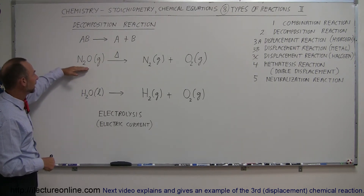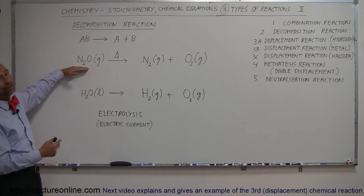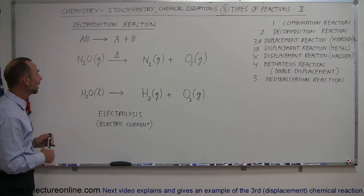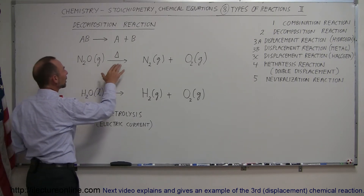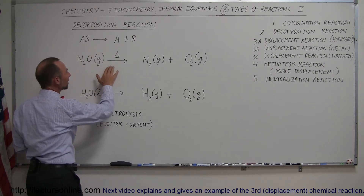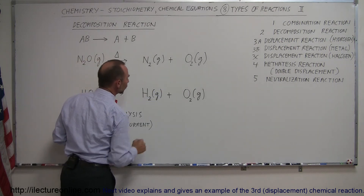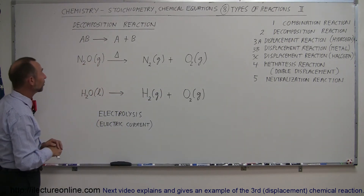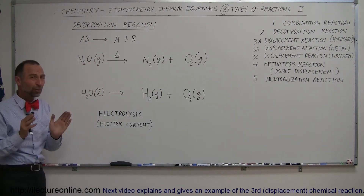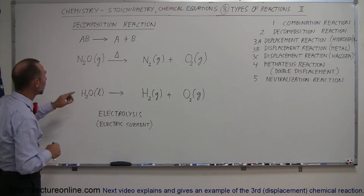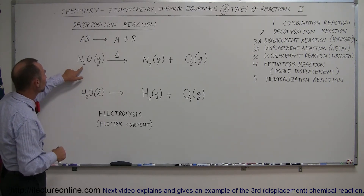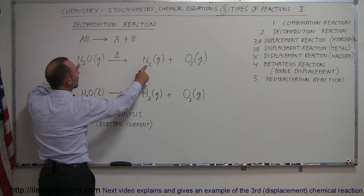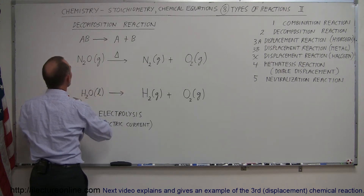Here we have what we call dinitrogen oxide, or nitrous oxide — also known as laughing gas — and when we heat that up we can separate it into nitrogen gas and oxygen gas. Now this equation is not balanced, but it's a simple equation. Notice we have two nitrogen atoms on the left and two nitrogen atoms on the right, so nitrogen is balanced.